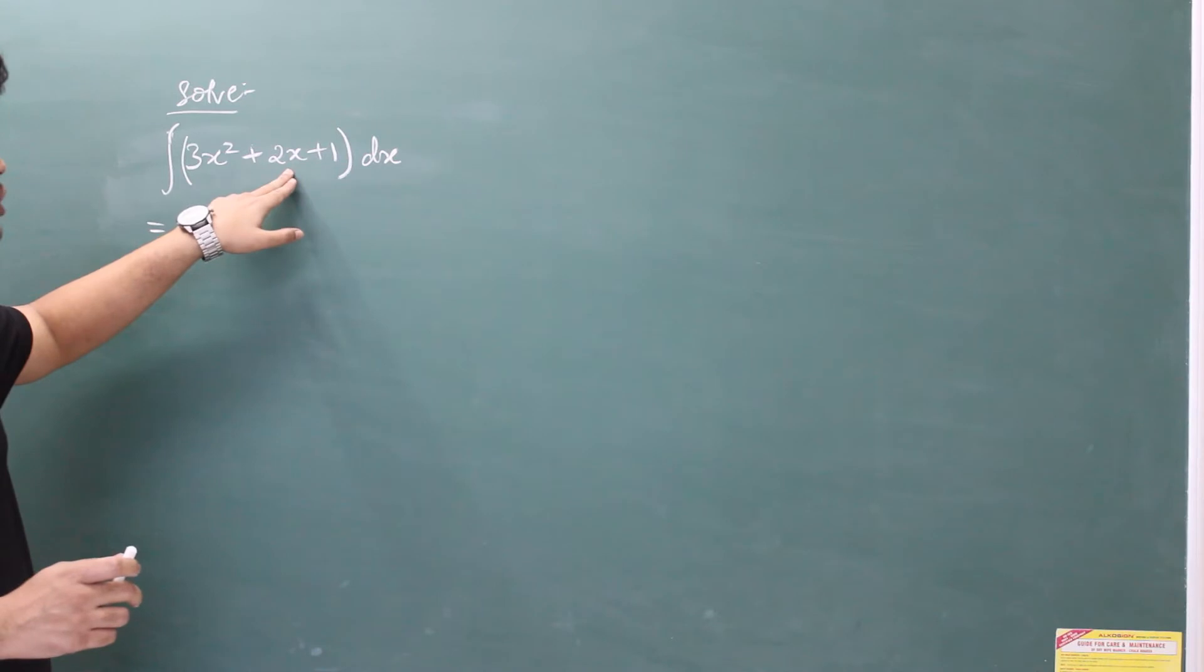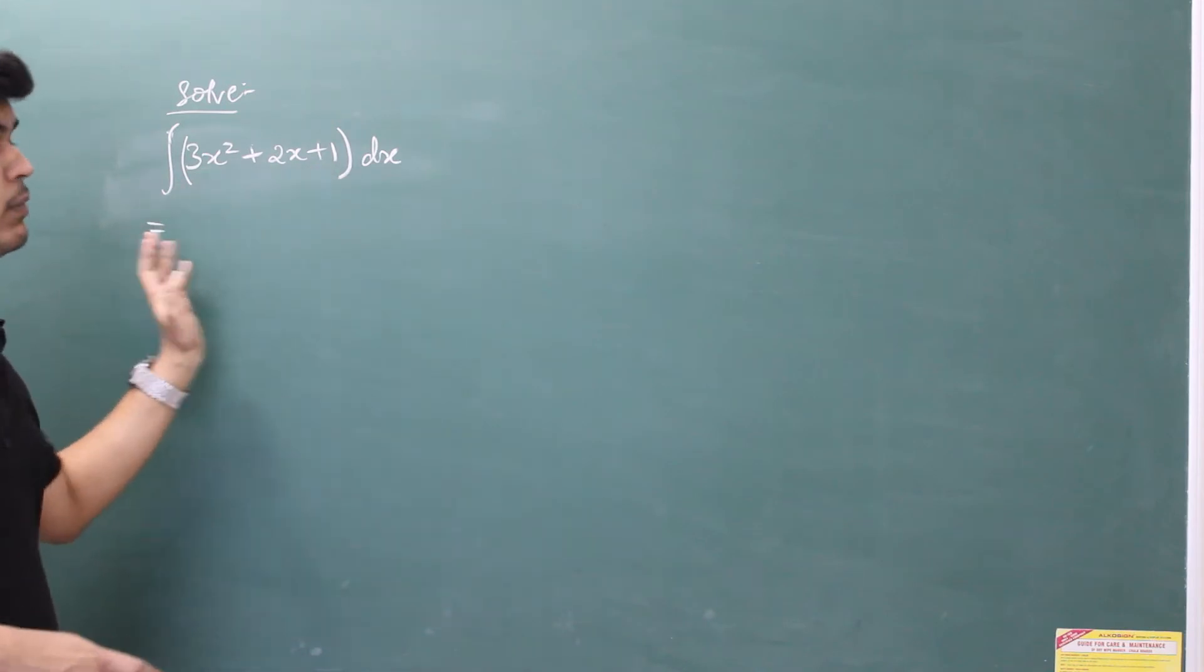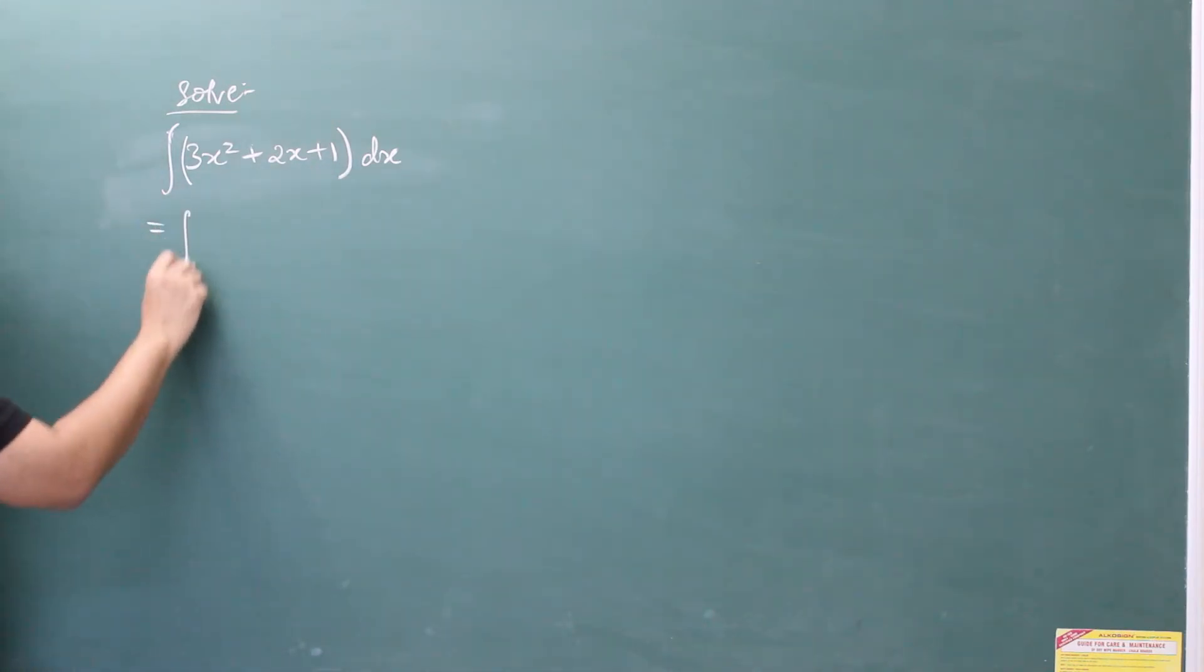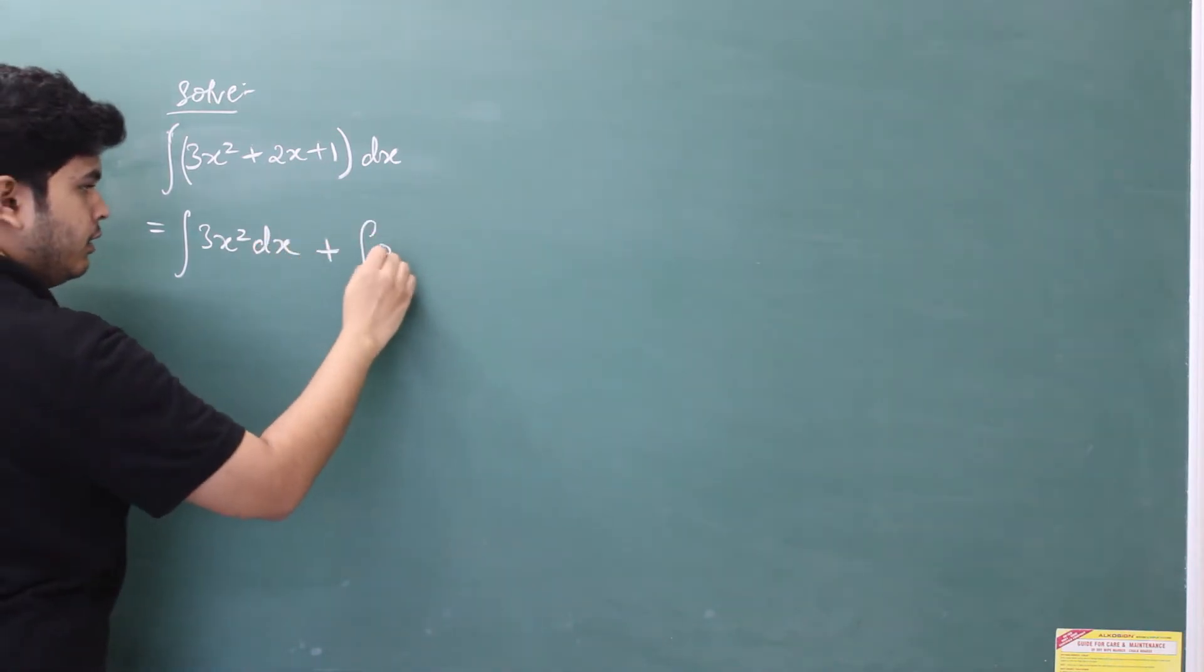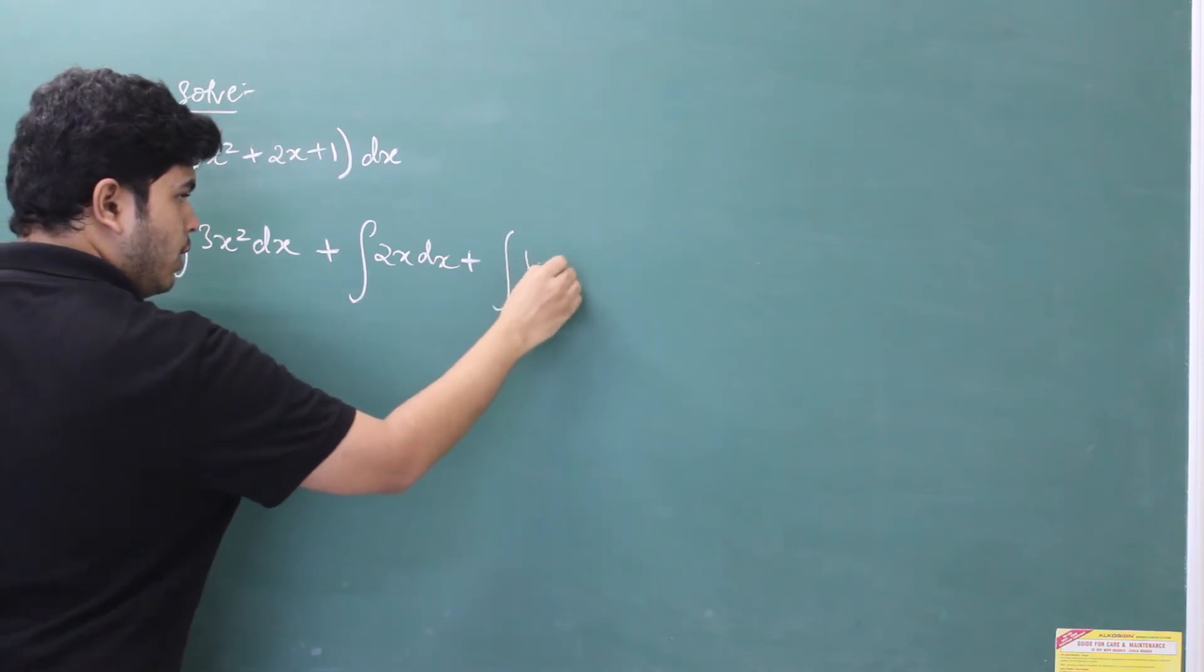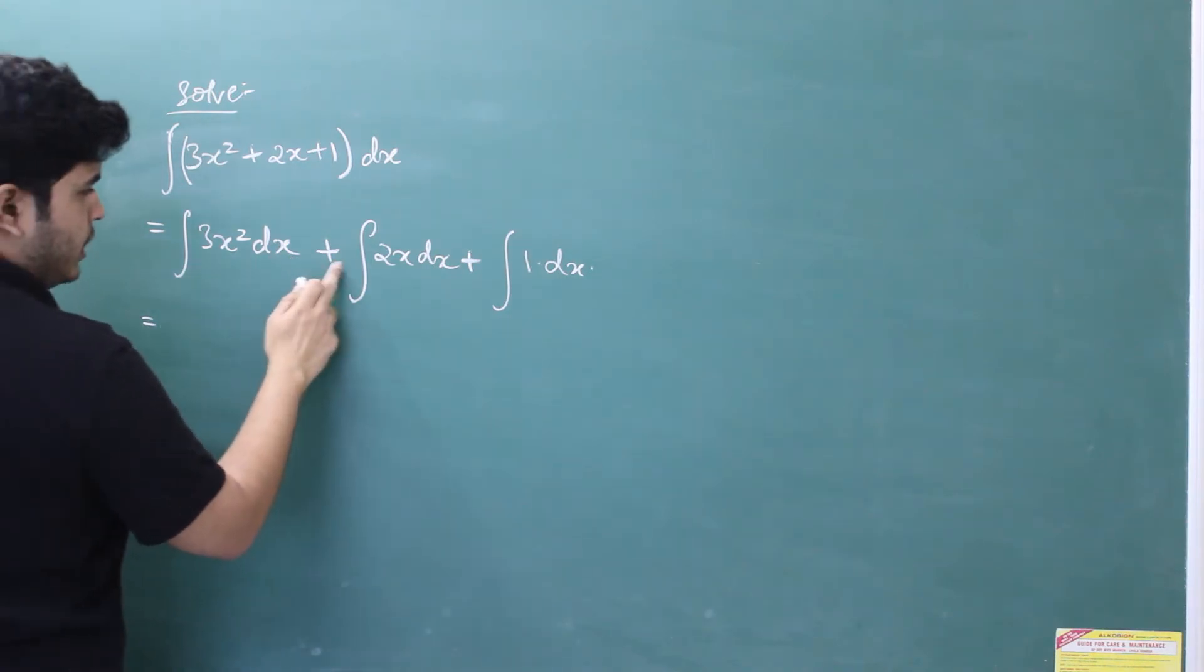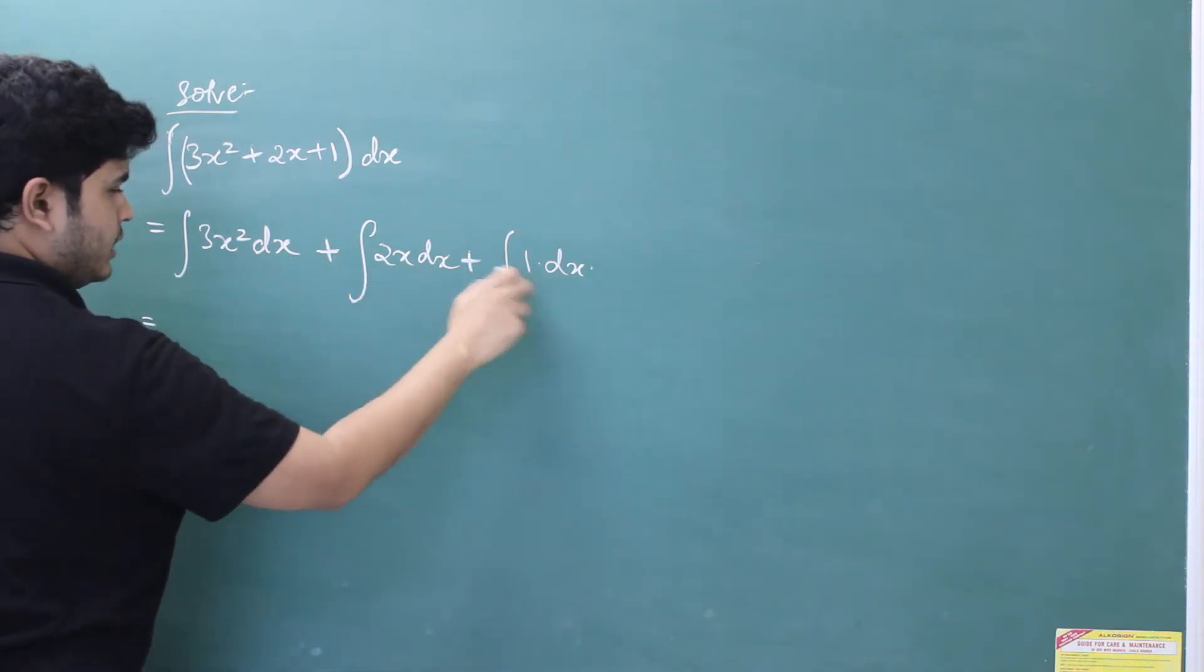3x squared is one term, second term is 2x, and the third term is 1. So let's distribute the integral sign and dx between all these terms. Integral 3x squared dx plus integral 2x dx plus integral 1 dx.